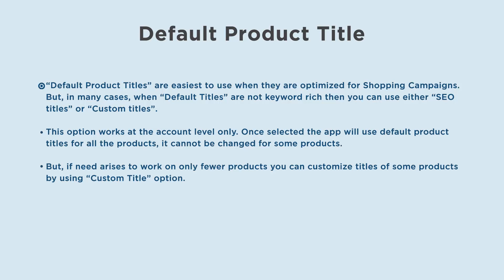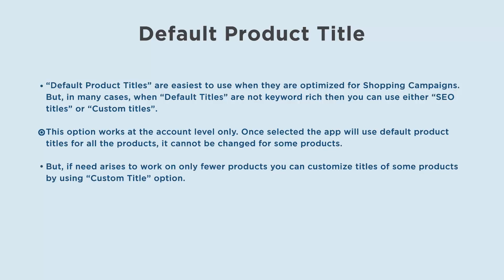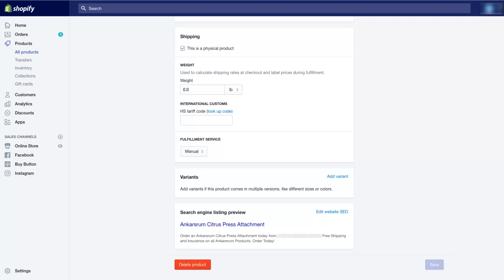Default product titles are easiest to use when they are optimized for shopping campaigns, but in many cases when default titles are not keyword-rich, you can use either SEO titles or custom titles. This option works at the account level only. Once selected, the app will use default product titles for all products. It cannot be changed for some products, but if need arises to work on only fewer products, you can customize titles using the custom title option.